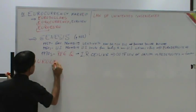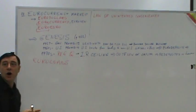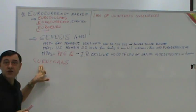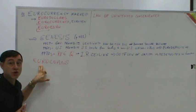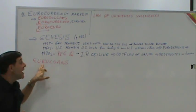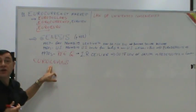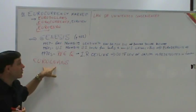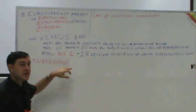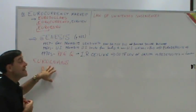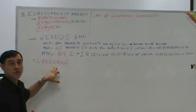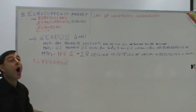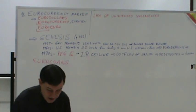A euro loan is simply a loan made in a foreign currency. Polish and Bulgarian banks were doing a lot of loans in euros and Swiss francs. As soon as you get euro-dollar deposits, they will be relent as euro loans — dollars lent as dollar loans to someone in Poland, Bulgaria, or back in England.